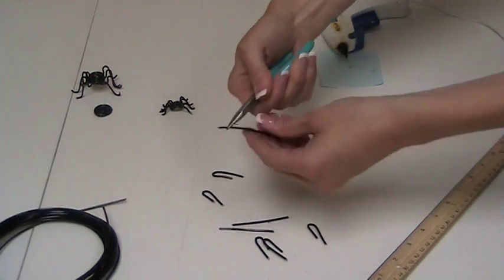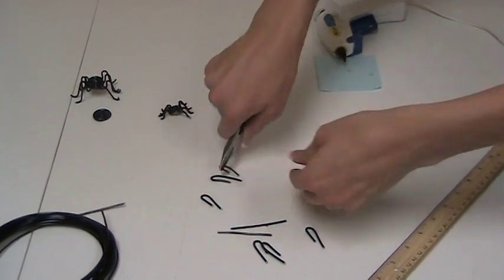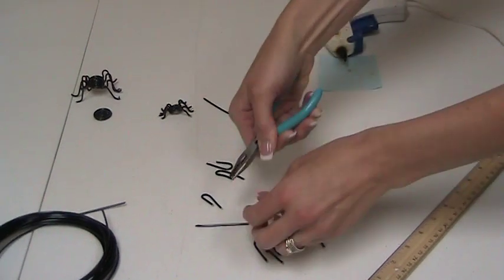If they're not exact, it doesn't really matter because you're going to be adjusting them when you're gluing.